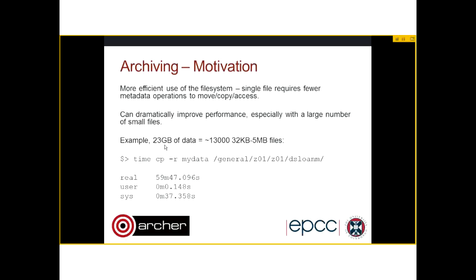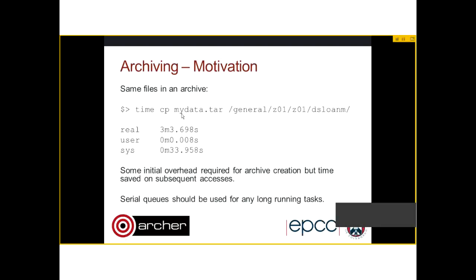As an example: 23 gigabytes of data made up from around 13,000 files of 32 kilobytes to 5 megabytes took me around one hour to copy from my workspace to the RDF. Whereas if we put the same data in an archive and copied that across, it takes just over three minutes — around 20 times faster. These times are variable due to file system contention, and there is some initial overhead in creating the archive, but you only do that once per data set and it speeds up all subsequent accesses.